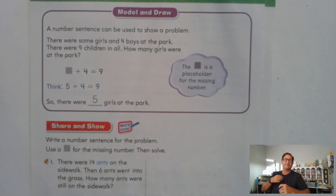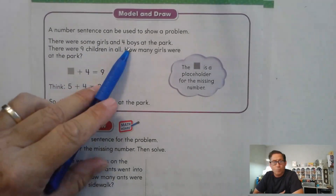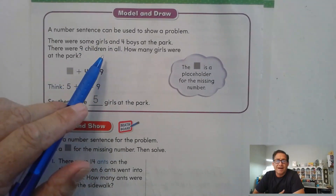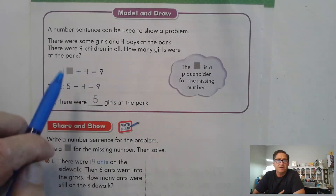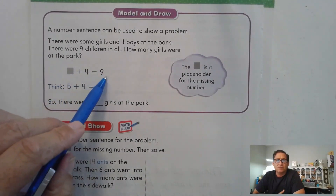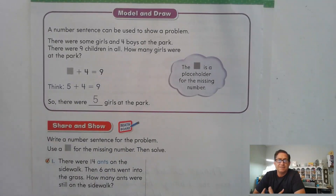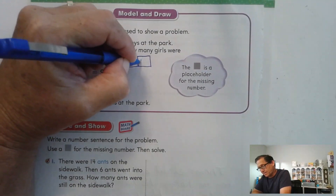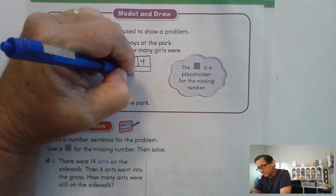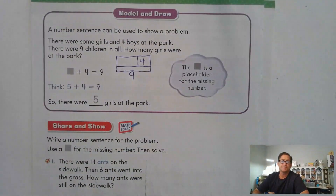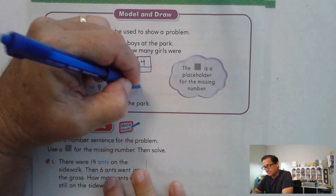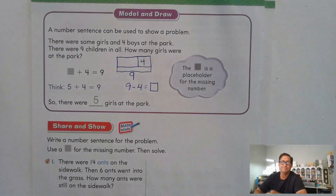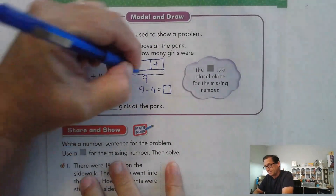Let's look at page 154. Keep in mind that a number sentence can be used to show a problem. There were some girls and four boys at the park, and there were nine children in all. How many girls are at the park? Some number of girls plus the four boys equals nine children in all — that number sentence represents this word problem. We could also say 9 minus 4 equals something, and we'd still get the missing number 5.